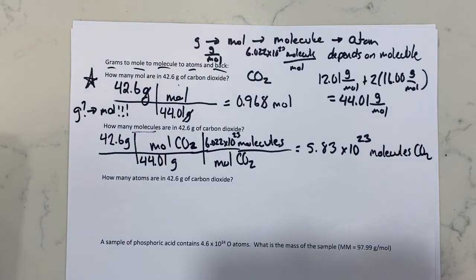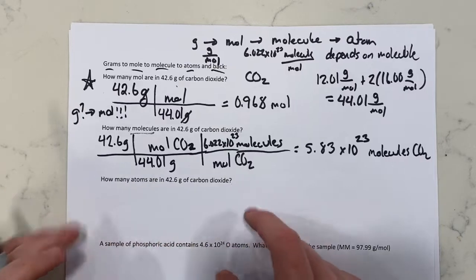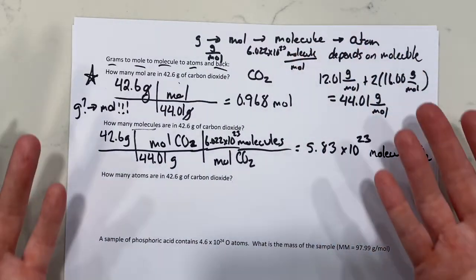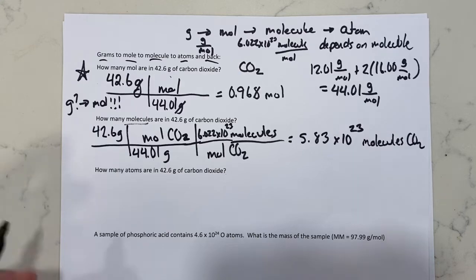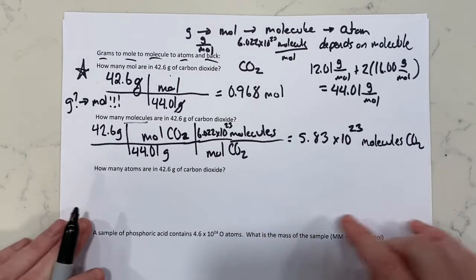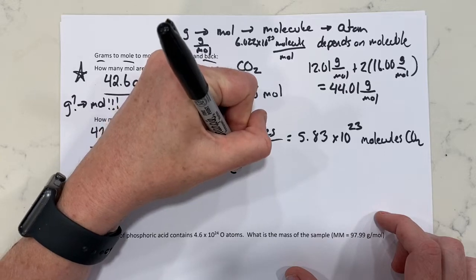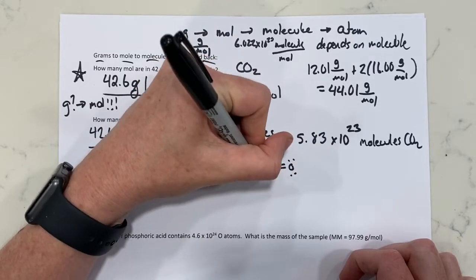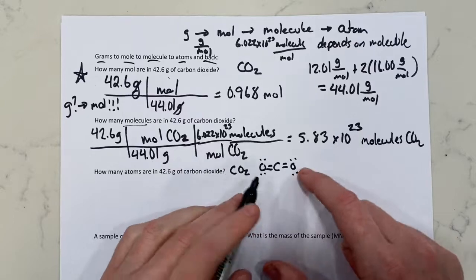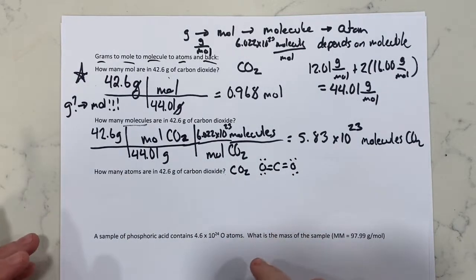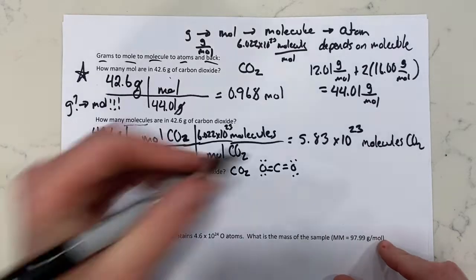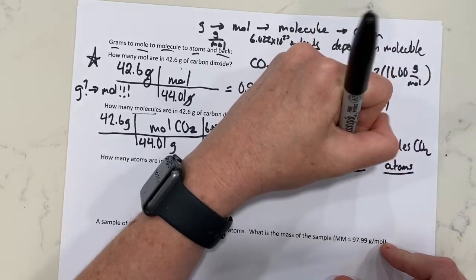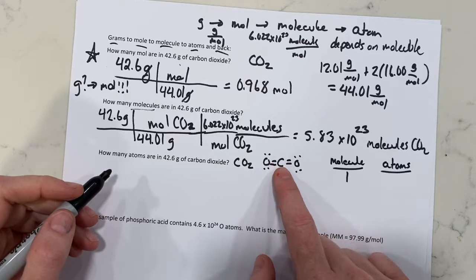Now we go from grams to mole to molecule to atoms. To go from molecule to atom, it depends on the specific molecule. Carbon dioxide is a carbon atom bonded to two oxygen atoms. So if I have one molecule of CO₂, how many total atoms do I have? Three.